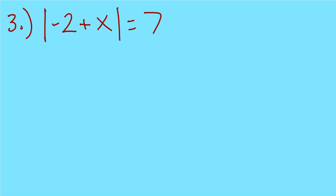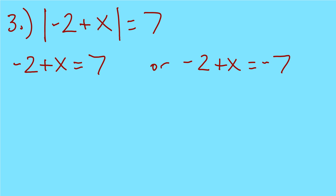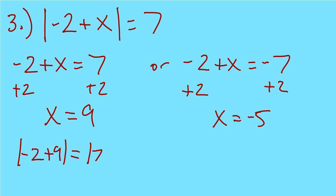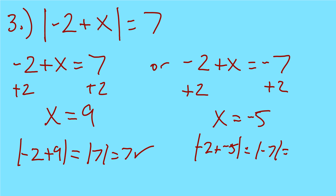Number 3: the absolute value of negative 2 plus x equals 7. I write it twice — negative 2 plus x equals 7, and negative 2 plus x equals negative 7. Notice I didn't change inside the bars. Adding 2 to both sides gives x equals 9 and x equals negative 5. Check: absolute value of negative 2 plus 9 is absolute value of 7, which is 7. Absolute value of negative 2 plus negative 5 is absolute value of negative 7, which is 7.